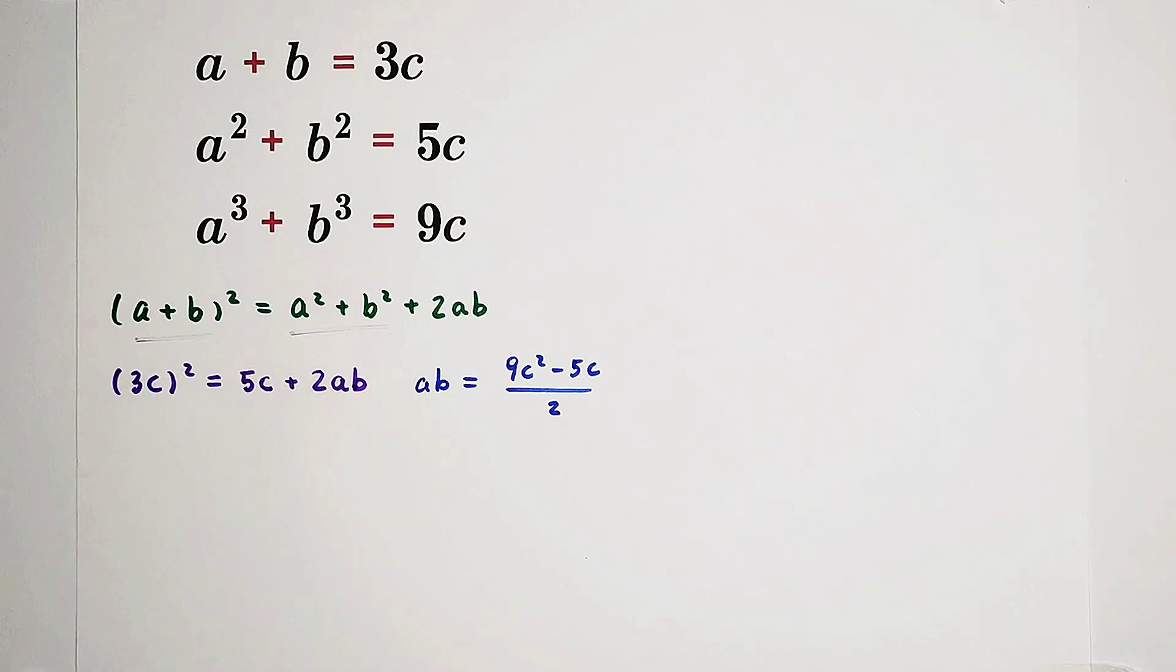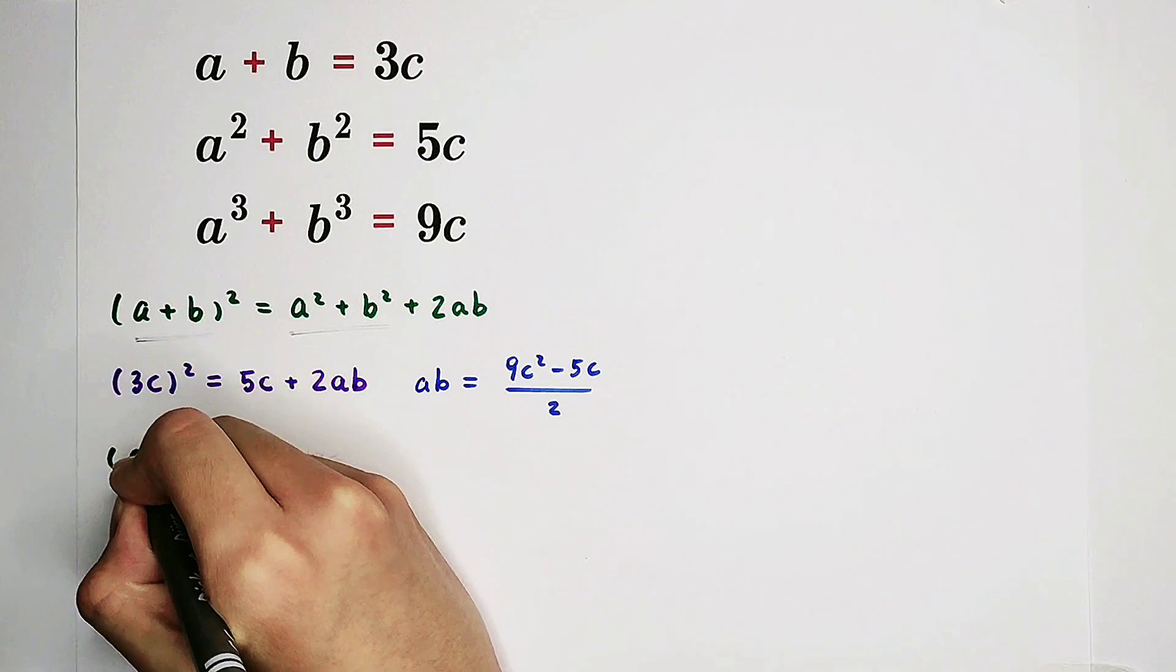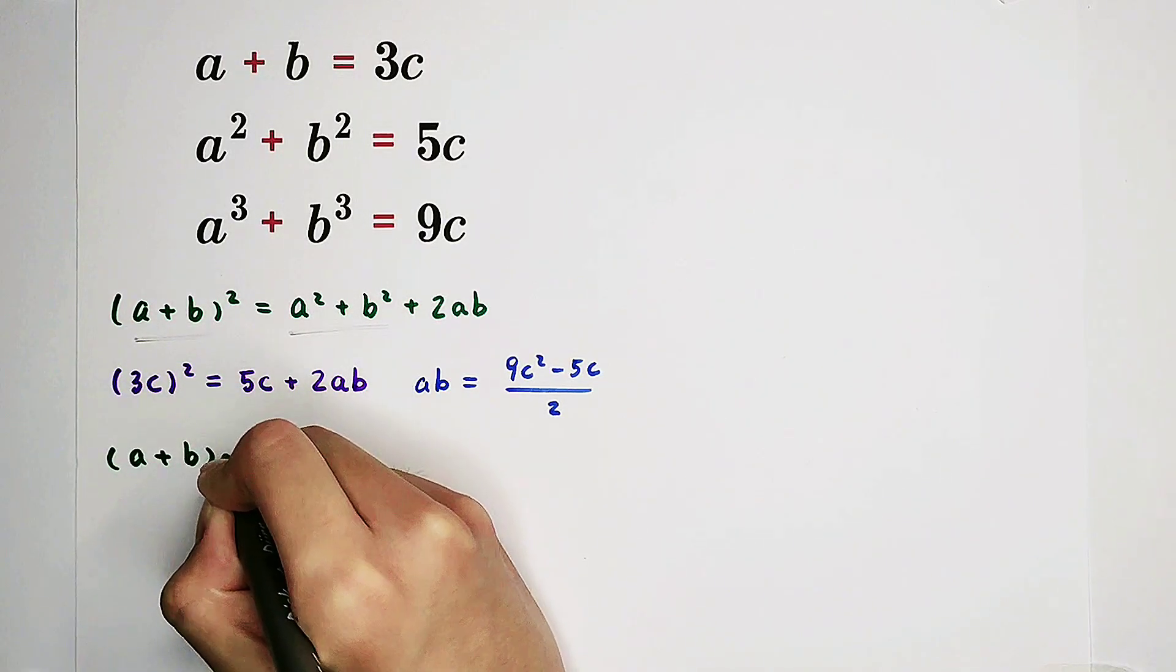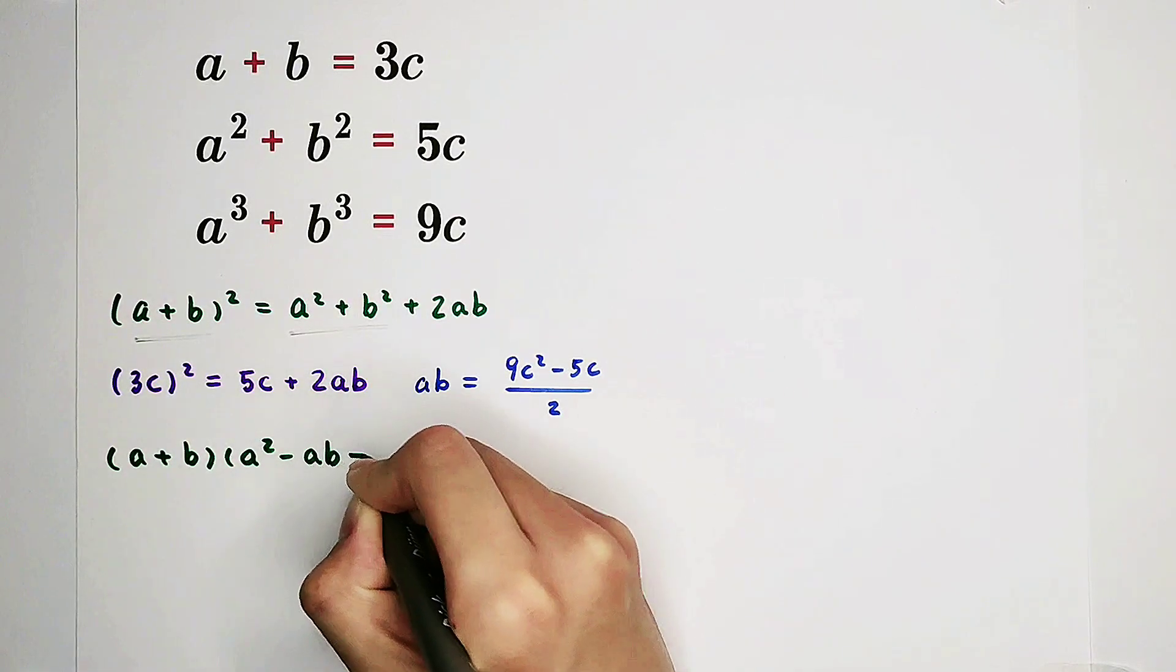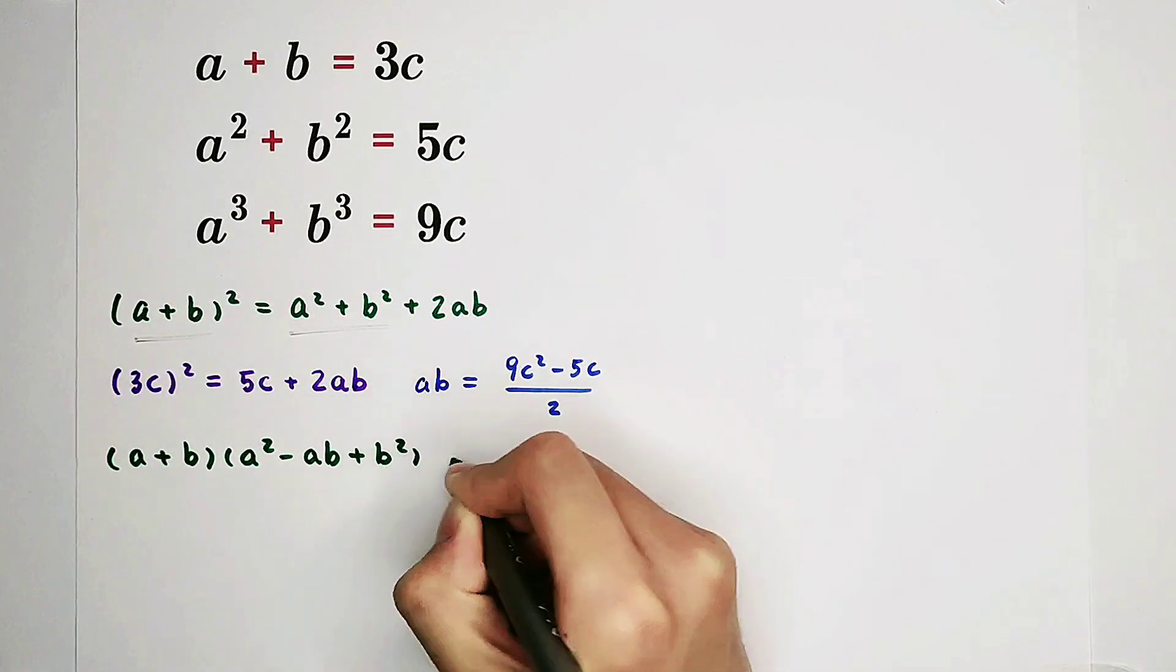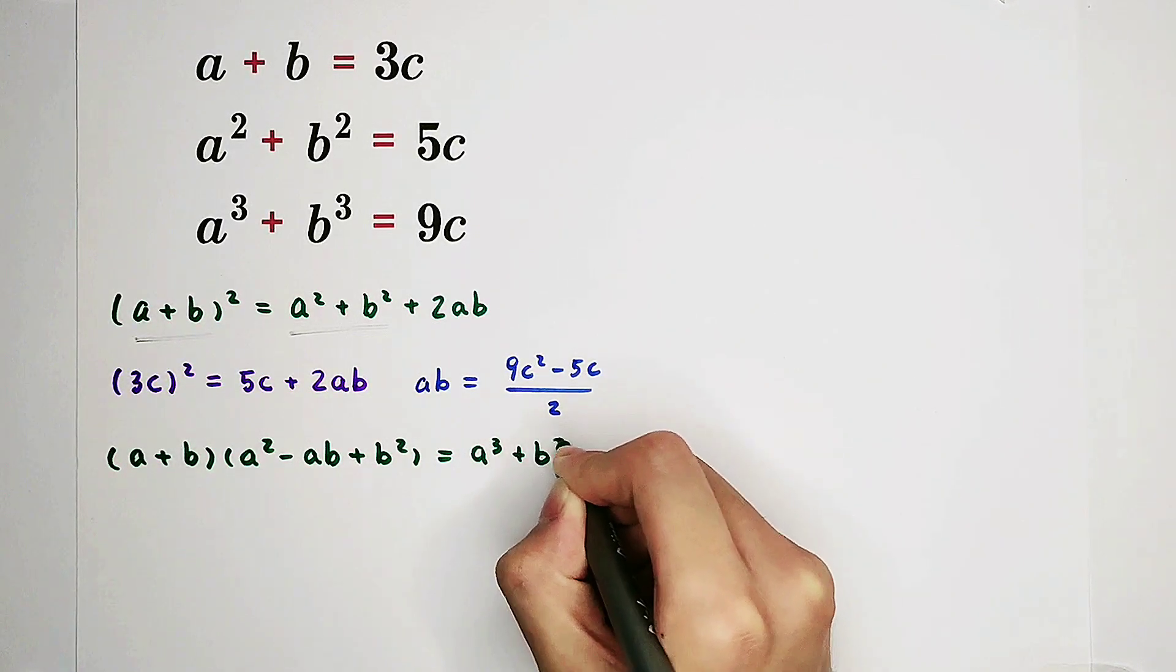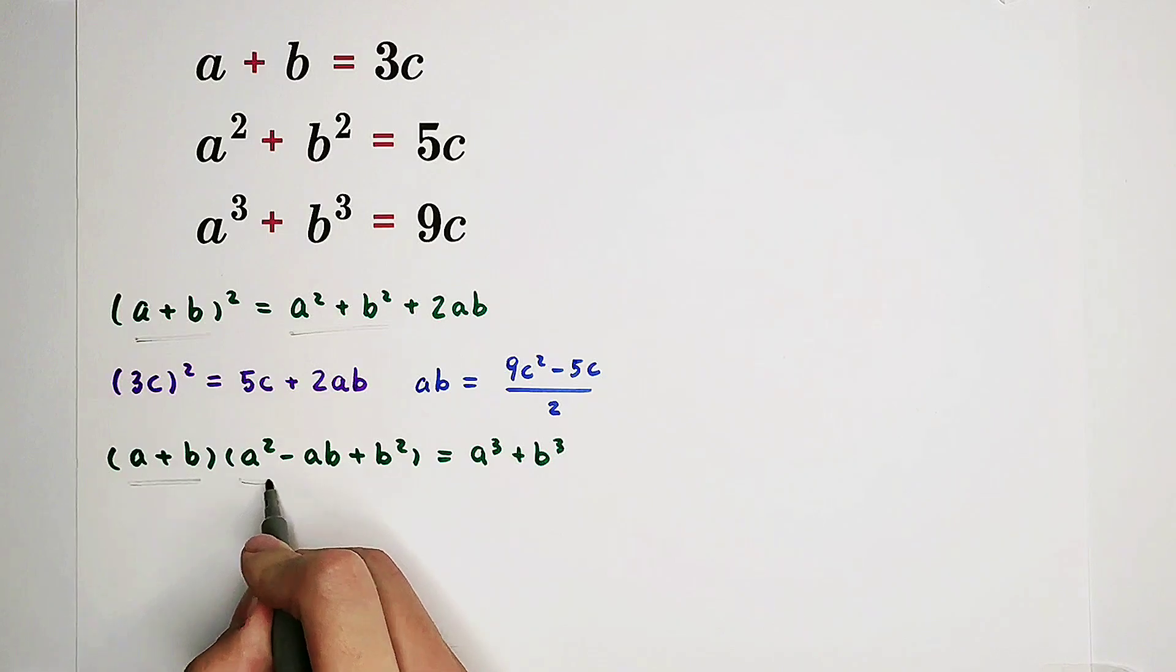a plus b cubed. Now, it's the term to a cubed plus b cubed. This guy, it can be factorized as a plus b times a squared minus ab plus b squared. Of course, this guy we know, and this guy here can be expressed.